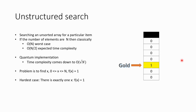Classically, if the number of elements in that array is n, it is expected that we will take at least n rounds or n/2 rounds to find that element. That's the time complexity — it is of order n.